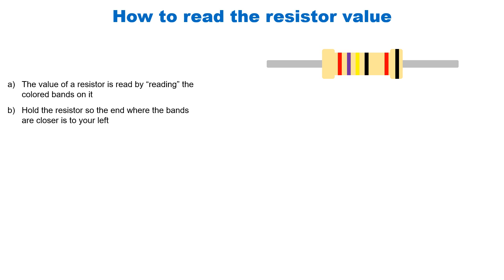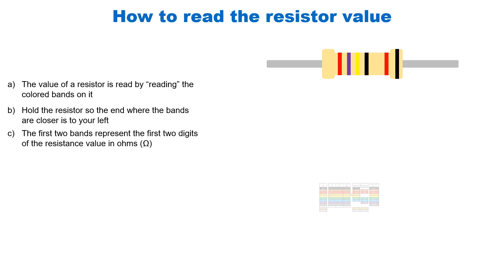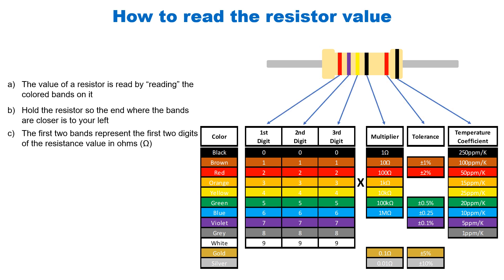The first two colored bands represent the first two digits of the resistor value, and these resistors are valued in ohms. Some resistors have three or four bands and some have five or six bands. On a three or four band resistor, the third band is the multiplier — the exponent of 10 raised to that power. So the multipliers are one, ten, hundred, thousand, ten thousand, hundred thousand, and a million.